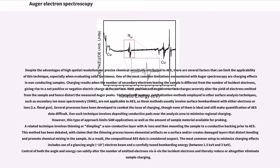Several processes have been developed to combat the issue of charging, though none of them is ideal and still make quantification of AES data difficult. One such technique involves depositing conductive pads near the analysis area to minimize regional charging. However, this type of approach limits SAM applications as well as the amount of sample material available for probing. A related technique involves thinning or dimpling a non-conductive layer with Ar ions and then mounting the sample to a conductive backing prior to AES. This method has been debated, with claims that the thinning process leaves elemental artifacts on a surface and/or creates damaged layers that distort bonding and promote chemical mixing in the sample. As a result, the compositional AES data is considered suspect. The most common setup to minimize charging effects includes use of a glancing angle (~10 degrees) electron beam and a carefully tuned bombarding energy between 1.5 kV and 3 kV. Control of both the angle and energy can subtly alter the number of emitted electrons vis-à-vis the incident electrons and thereby reduce or altogether eliminate sample charging.